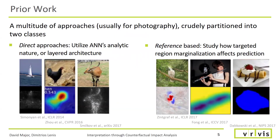A multitude of approaches have been presented for this. Crudely, they can be partitioned into two classes: direct and reference-based approaches. We show some popular methods for both, including the classic saliency map and the more advanced CAM visualizations. Direct approaches utilize artificial neural networks' analytic nature or layered architecture. Contrary, reference-based approaches consider the network as a black box and study how the classifier reacts to perturbations of the input image, using the original input score as a reference and neutralizing a dedicated image region's contribution to estimate its effect on the classification score.